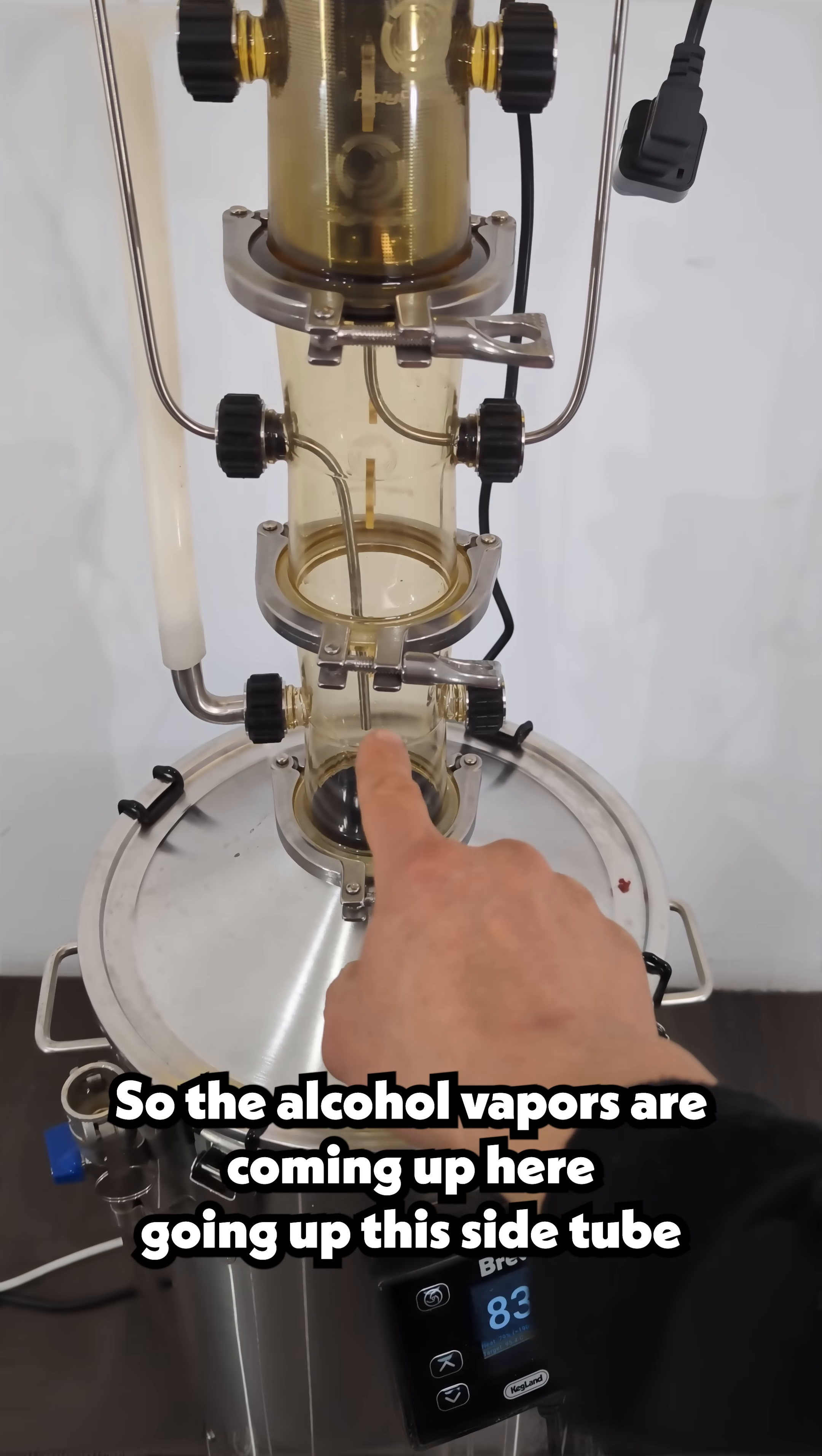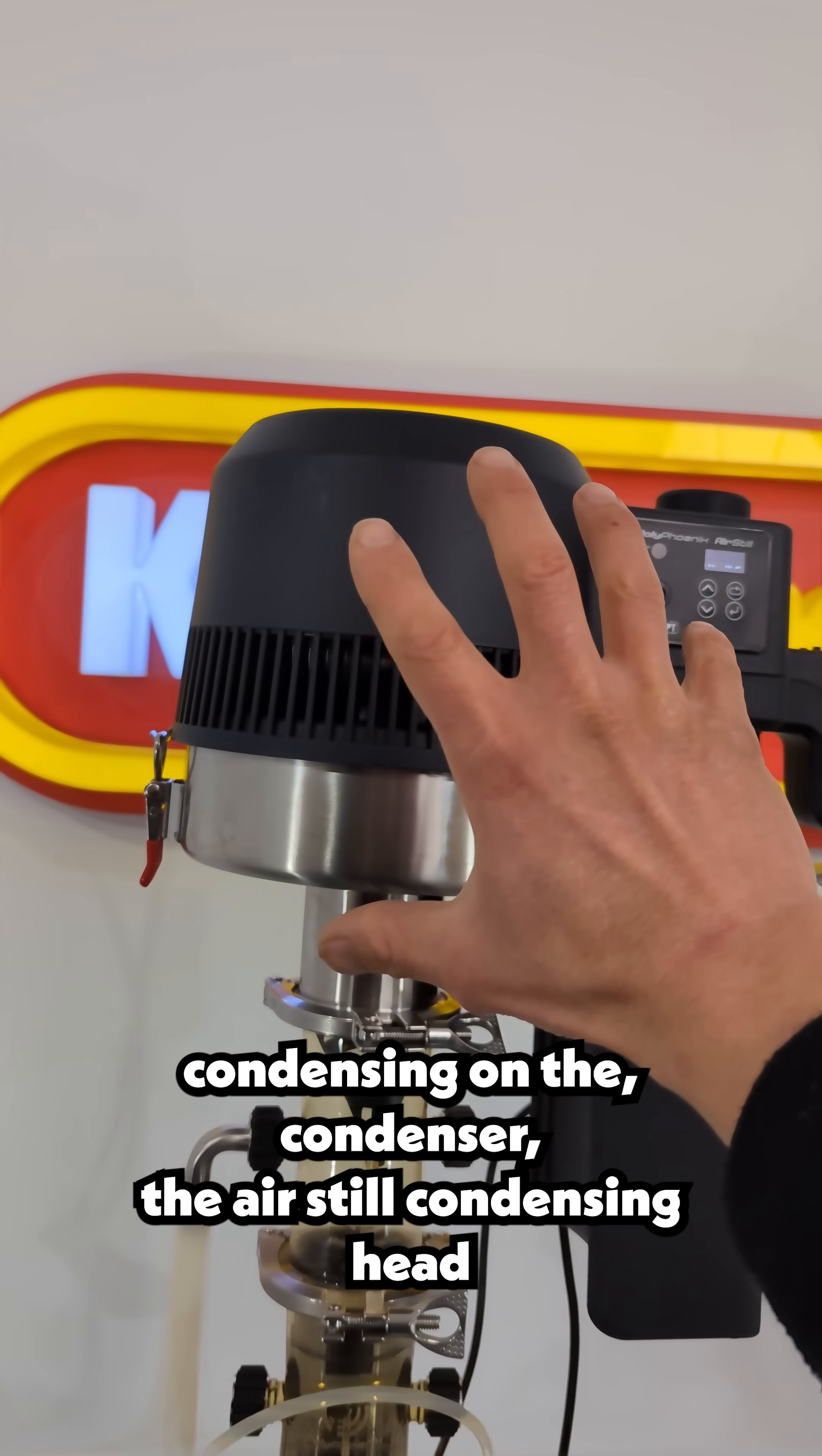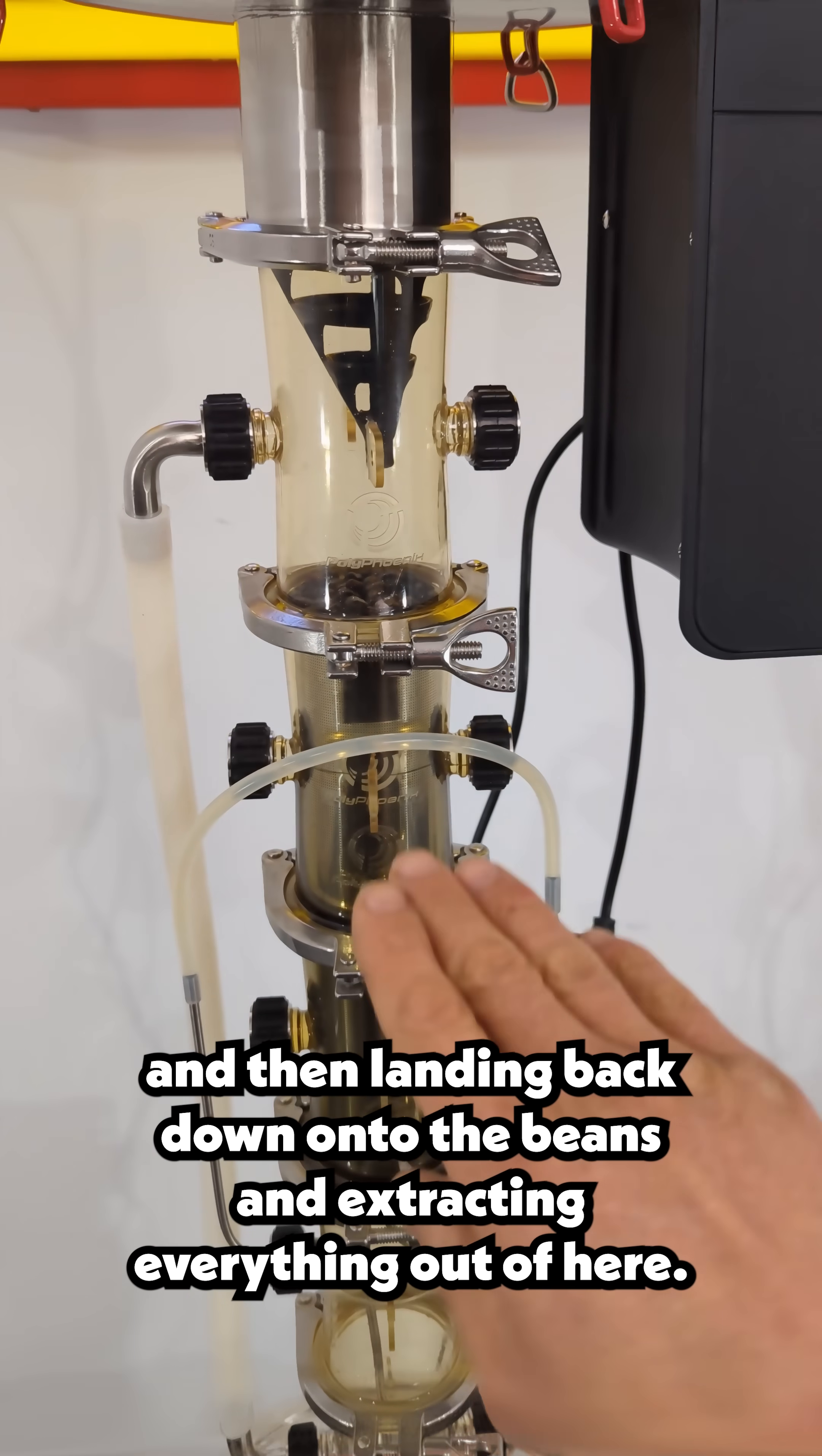So the alcohol vapors are coming up here, going up this side tube, condensing on the condenser, the air still condensing head, and then landing back down onto the beans and extracting everything out of here.